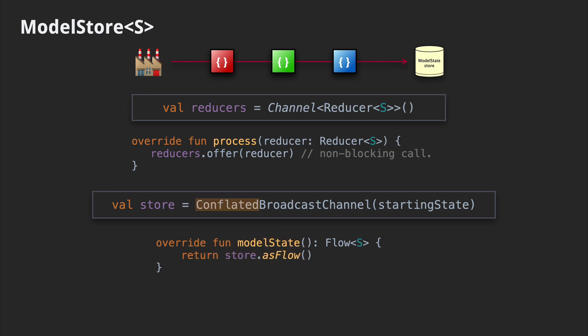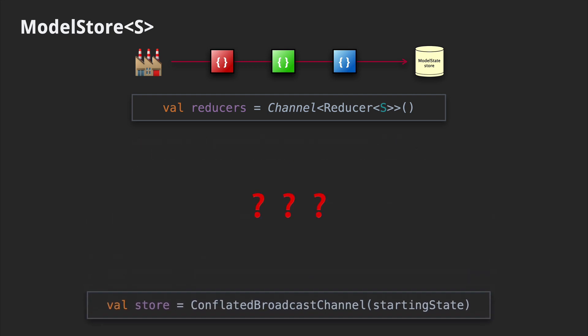Conflated here means that subscribers will only get the most recently sent value — no buffering will take place. That's important so that new subscribers don't get echoes from the past. So now we need to figure out what the glue is between these two channels. Our goal is to take a series of reducers, changing state by applying them one after the other, and sending those results into the store channel.